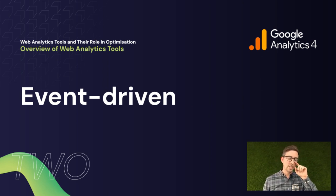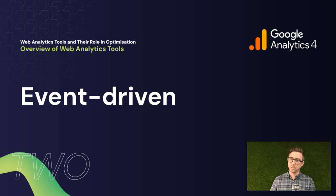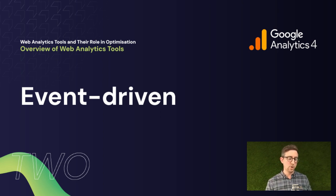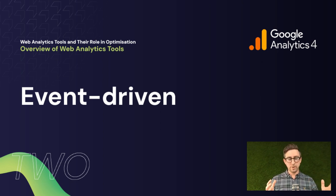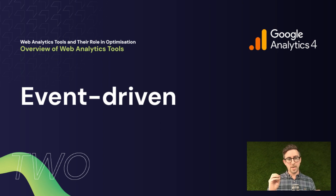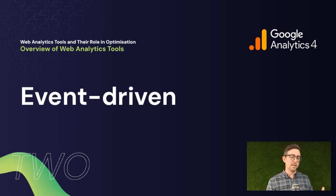GA4 is event-driven, which is a really important one to focus on. Universal Analytics was more session-driven — about page views, time on site, and what pages people accessed. GA4 has fundamentally shifted to event-driven, drilling down into more granular user behavior. It still tracks sessions, but also the events that take place during interaction — like time spent on a page exceeding 10 seconds, clicking a call to action, or submitting a form. You can set up what these events are, giving you more granular detail about what users are actually doing.